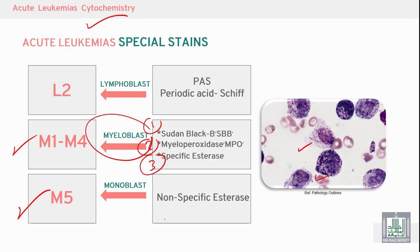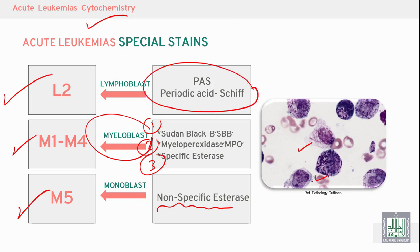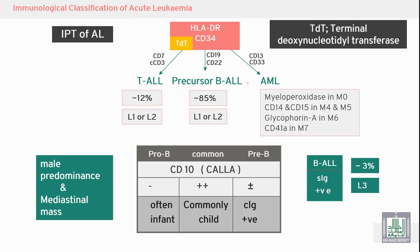In M5, we can stain the cytoplasm using non-specific esterase. In lymphoid leukemia, we can stain the cytoplasm using periodic acid-Schiff (PAS) stain.